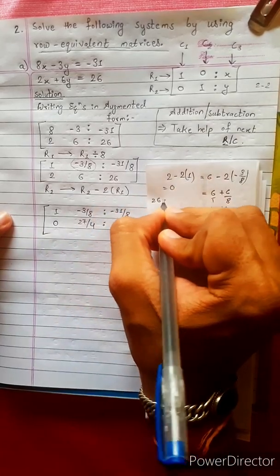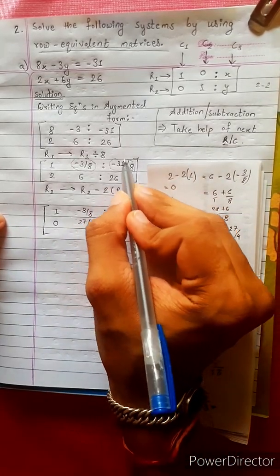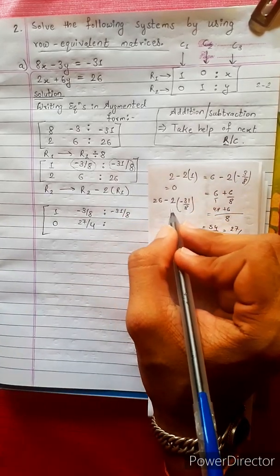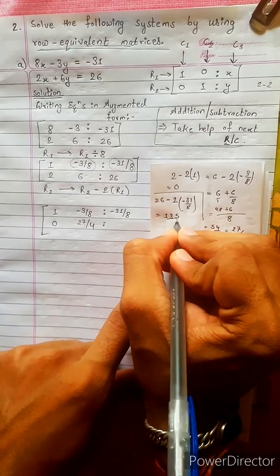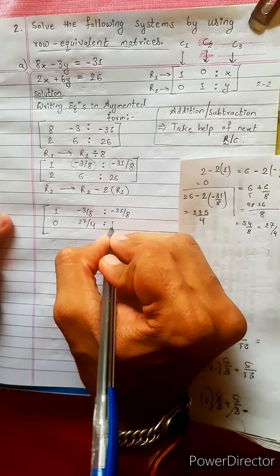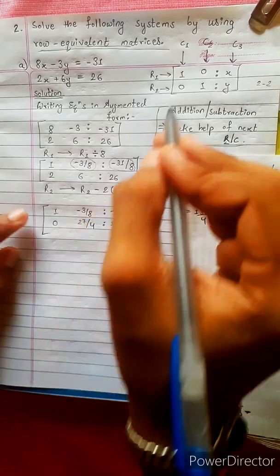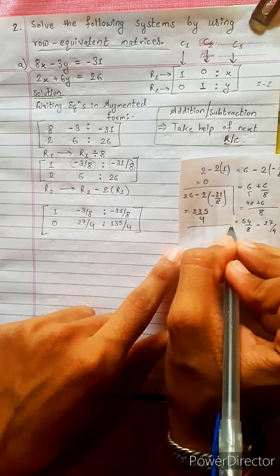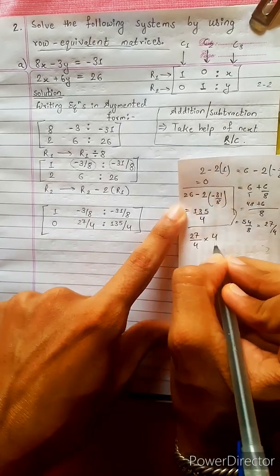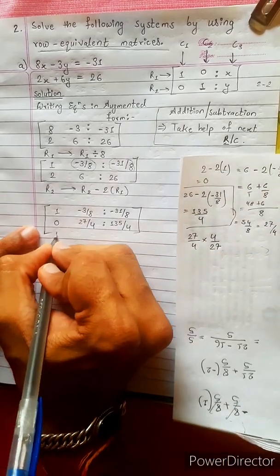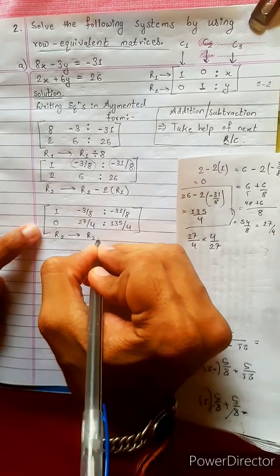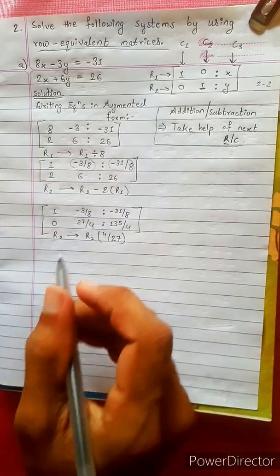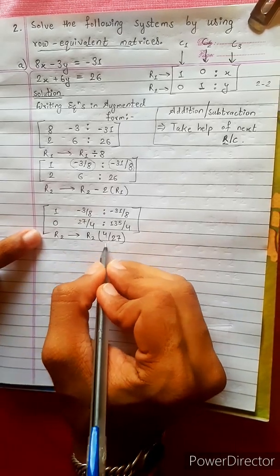26 minus 2 times R1 is 26 minus 31 by 8. Using the calculator: this is 135 divided by 4. Let's write 135 divided by 4. If this is 1, we can multiply the row by 4. This is 27 by 4 multiplied by 4 by 27, which gives 1. This will change R2 — multiply by 4 by 27.